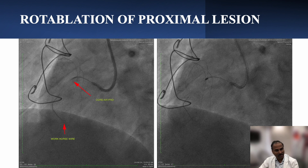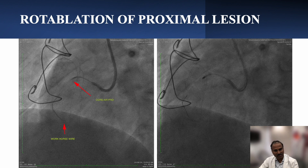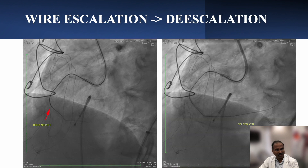We decided to go ahead with ablation of this lesion — a sequential ablation approach: first ablate the proximal lesion with the wire proximal to the distal lesion to create space, then chase the second lesion. Rotablation with 1.5 mm burr was performed — you can see we ablated this calcium nodule. After adequate ablation we came out, advanced Corsair further down, escalated again to UB3 then de-escalated to Fielder XTR, and crossed the lesion, sending the wire into the distal RCA.